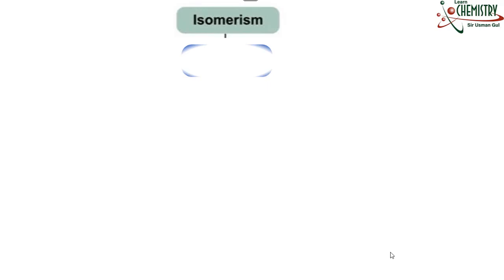Today in this lesson I will explain what is isomerism and its types. Starting with the definition, it has a very simple definition: compounds having the same molecular formula but different structures are called isomers to each other, or isomers. And this terminology or phenomena is called isomerism.